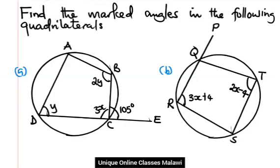We have two problems and now we should find the marked angles in the quadrilaterals. We have two diagrams here: quadrilateral ABCD and another quadrilateral QTSR. In the first diagram we have marked the angle y, the angle 2y, and the angle 3x, whereas in the other diagram we have 3x plus 4 referring to this angle and also this one. Let me start by solving.